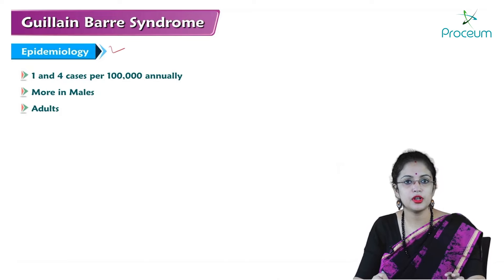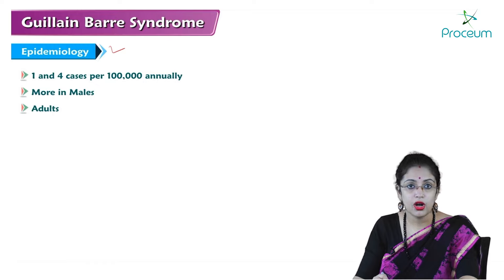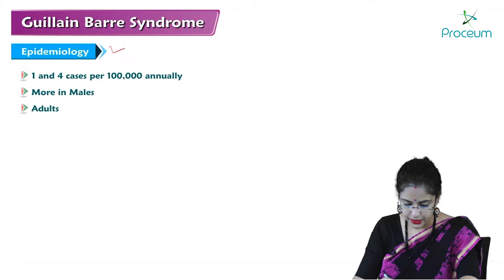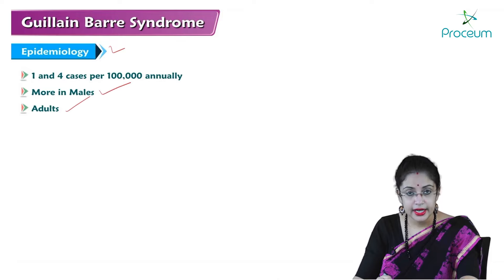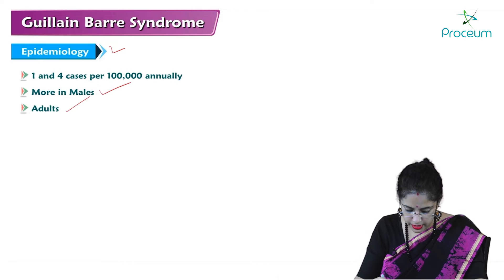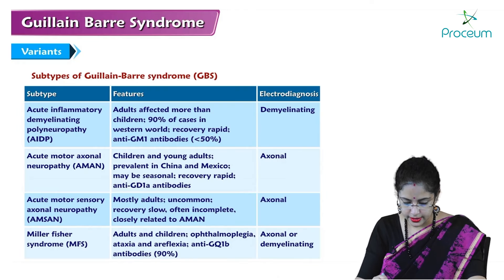Epidemiology: the incidence is 1 to 4 cases per one lakh persons annually. It is more common in males and it is a disease of adults.